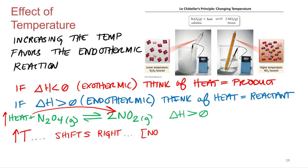Shifting to the right, the concentration of NO₂ is going to increase — we're making more product. The concentration of N₂O₄ is going to go down. If this were an exothermic reaction, it would be completely opposite: we would be shifting to the left because heat would be a product. Shifting left makes more reactants and uses up more products.